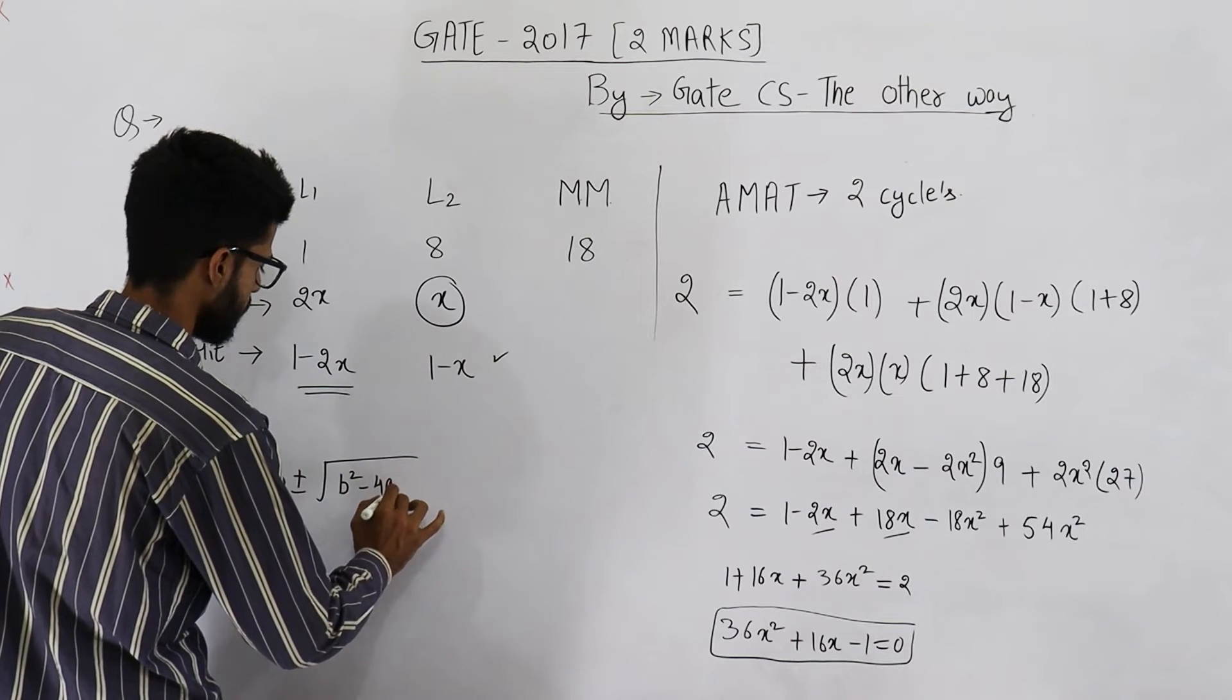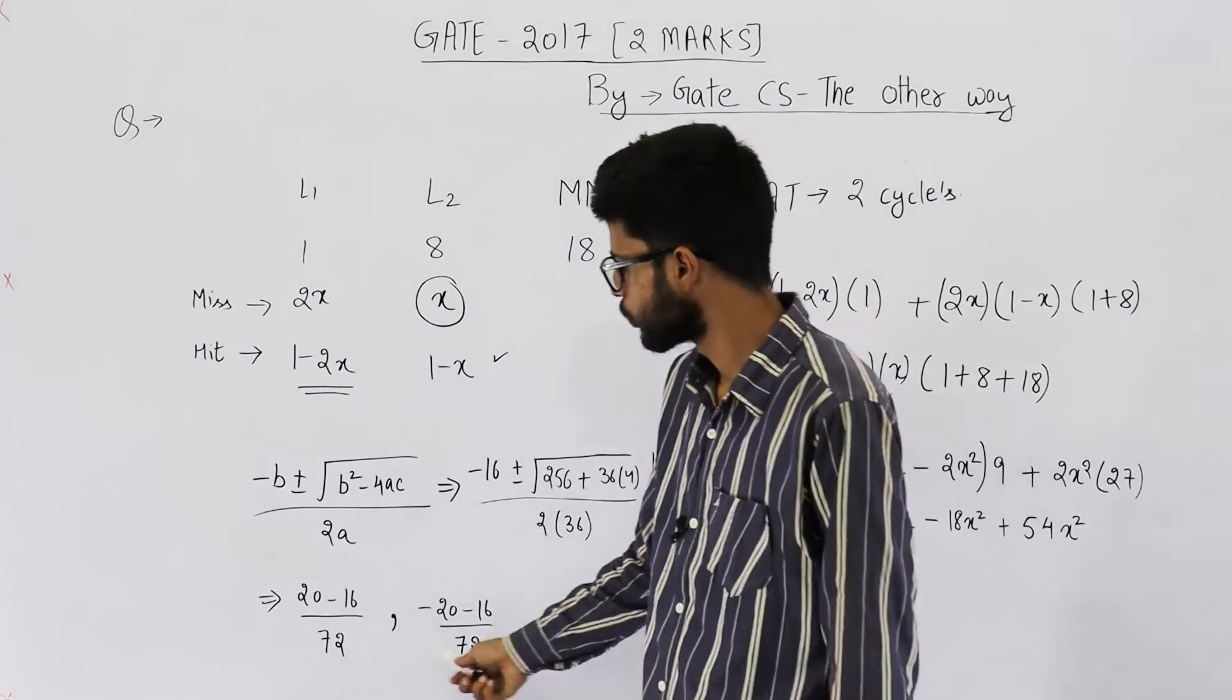I hope you know the quadratic formula. It is minus b plus minus under root of b square minus 4ac divided by 2a. So, I am solving it. You can see the roots of this quadratic equation are these two.